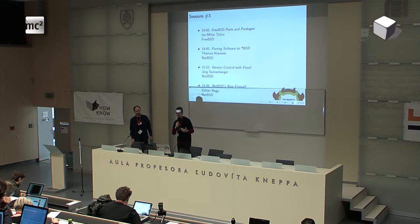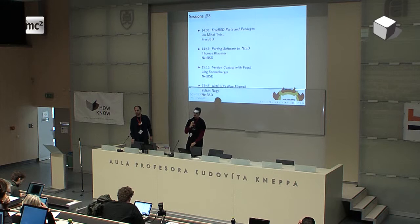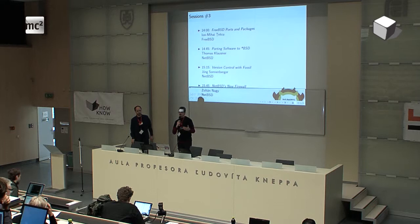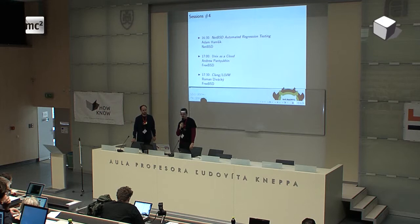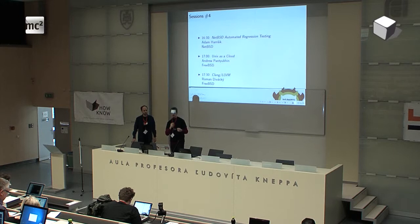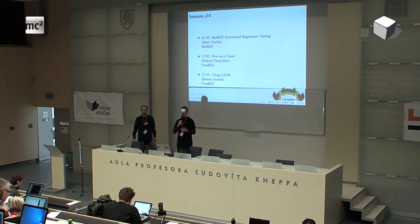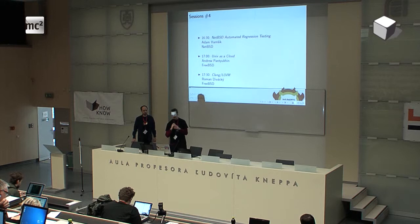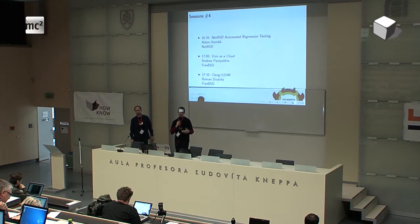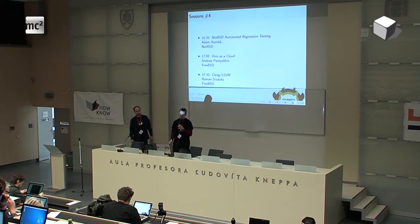There will also be a presentation on NetBSD's new firewall — NetBSD people started to rewrite it and would like a new iteration on firewalls. Then the last sessions are about automated regression testing, which is about testing source code stability — an automatic way to be sure that code is still running and passing all the tests. There will be a presentation on Unix as a cloud, showing how to use a Unix system as a cloud service. And the last talk will be about Clang/LLVM — Clang is a compiler and LLVM is a framework for compilers, both under BSD license. FreeBSD has started to use this framework for compiling its own sources.